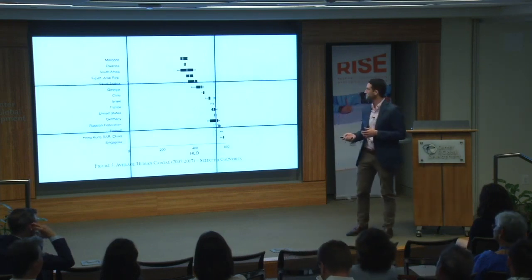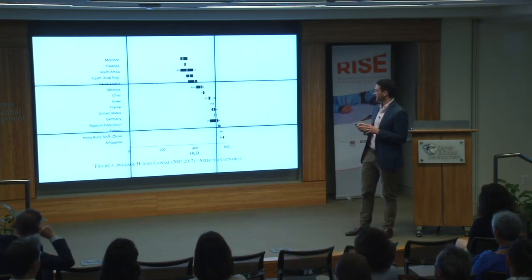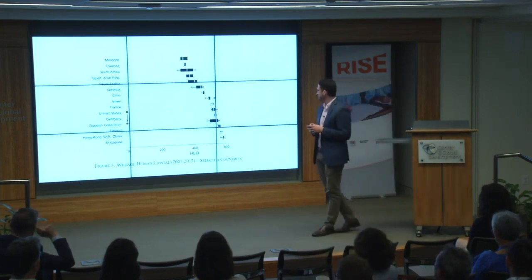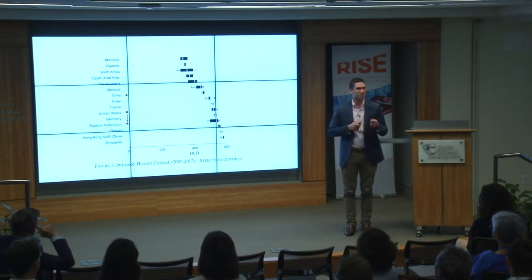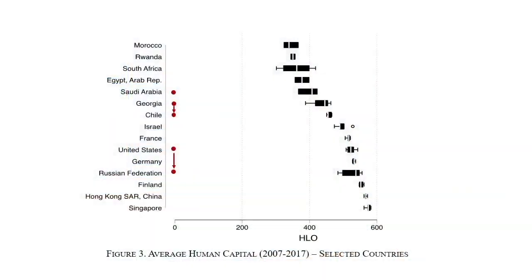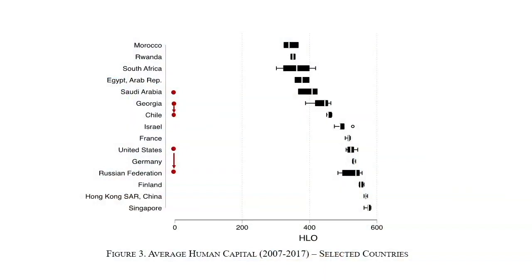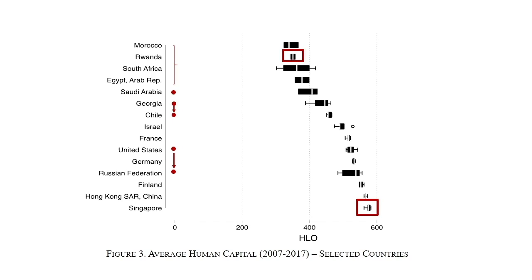Looking at selected countries in our descriptives: Russia has pulled ahead of the US, largely driven by recent PIRLS data. Chile and other top Latin American countries are outperforming some Eastern European counterparts. Georgia and Saudi Arabia, a relatively rich country, are not doing so well. At the bottom, resource-rich countries are not producing the level of human capital their wealth might predict, along with a number of African countries. Singapore has low variation because it's been at the top for a while — potentially a diminishing returns effect.